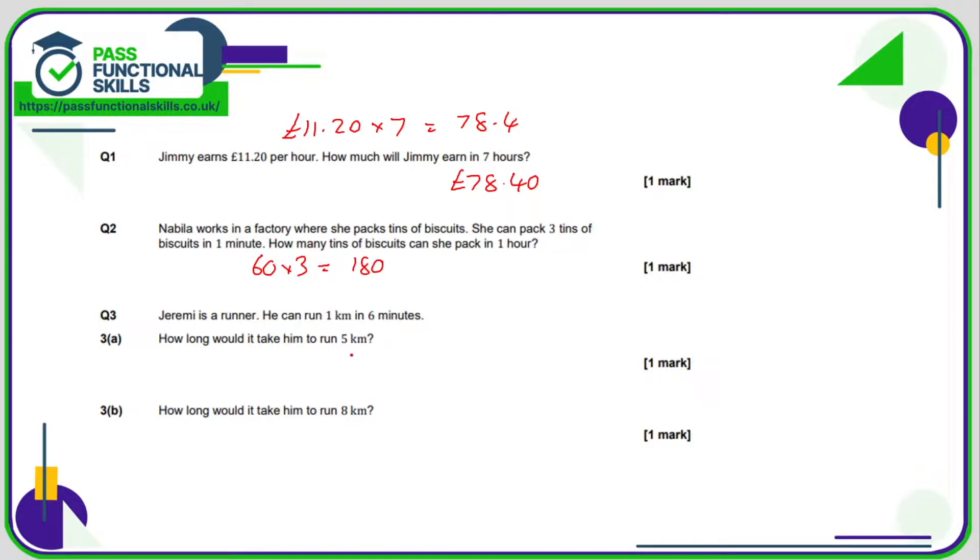Question 3, also non-calculator. So I think we just need to assume that he's going to run at the same speed for 5k as he does for 1k and also for 8k as well. So 1km is 6 minutes, so 5k is going to be 5 times 6 minutes, which is 30 minutes. And for 8k that's just going to be 8 lots of 6 minutes, which is 48 minutes.